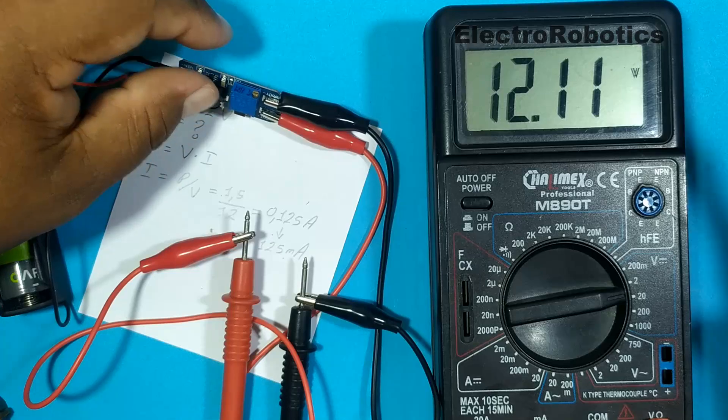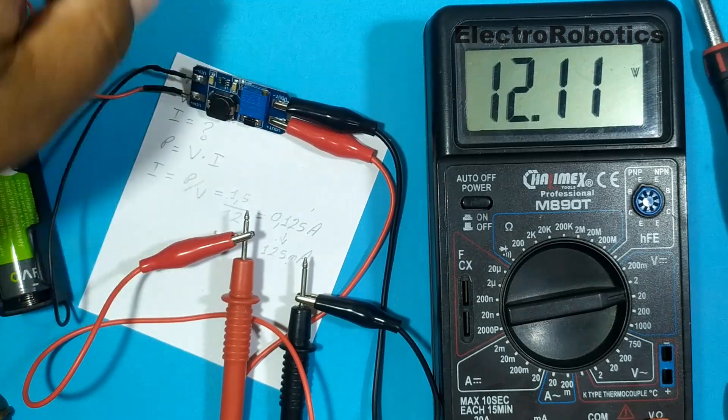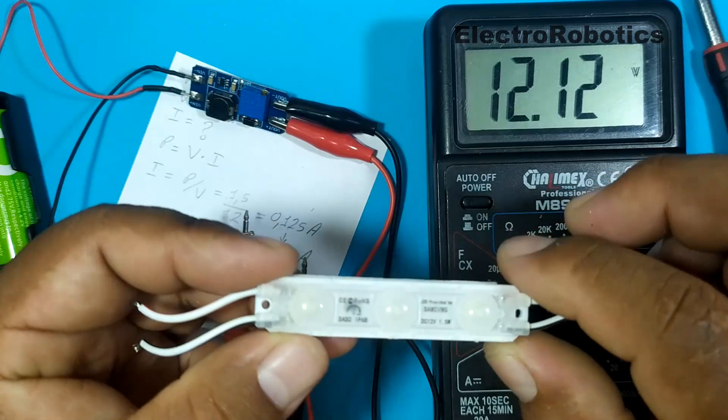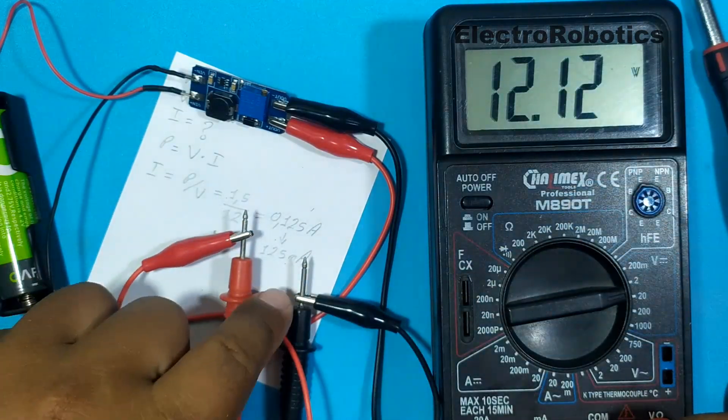Well, we have 12 volts. With those 12 volts we are going to test our LED module and check the calculated current.